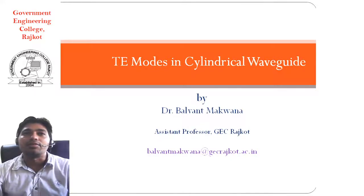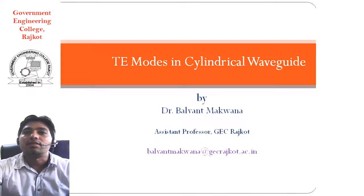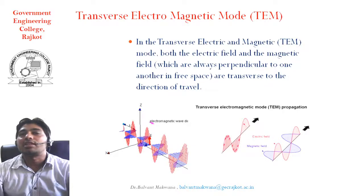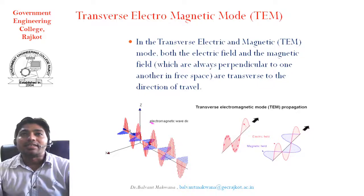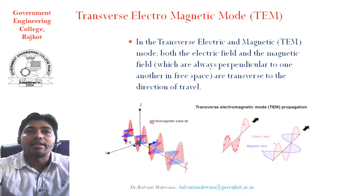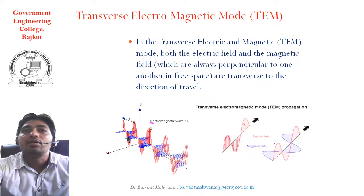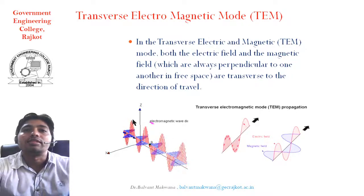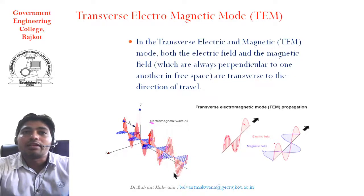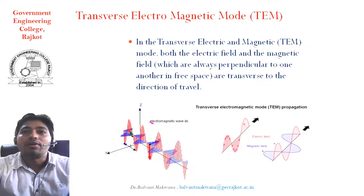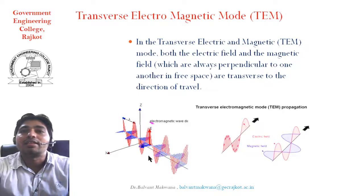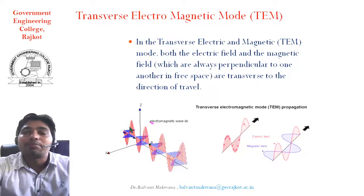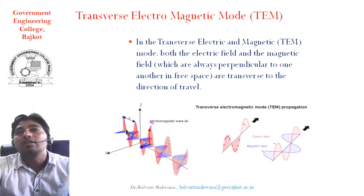First of all, we will start with the waveguide. Basically there are three kinds of waves. The first one is the transverse electromagnetic wave, known as TEM wave. In the TEM wave, the red one is the electric field and the blue one is the magnetic field. The electric field and magnetic field components are always perpendicular to each other, and the wave is propagating along the y direction. So in the transverse electromagnetic mode, both electric field and magnetic field are always transverse to the direction of travel.